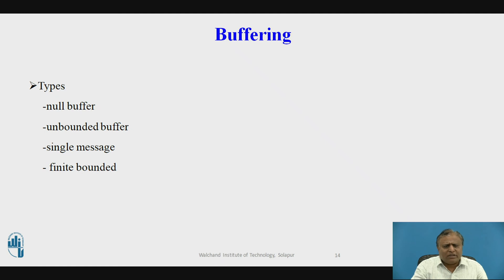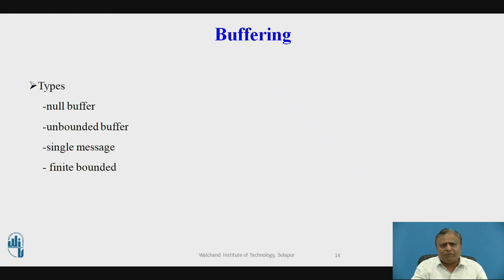Buffering strategies: In null buffering, there is no use of any buffer — the message is copied directly from source to destination. In unbounded buffering, the message is copied from the sender to a buffer where it is stored, then transferred from the buffer to the receiver. In single message buffering, the message is transferred from the sender to a buffer and then to the receiver. In infinite bounded buffering, the message is transferred from the sender to a finite bounded buffer and then to the receiver.